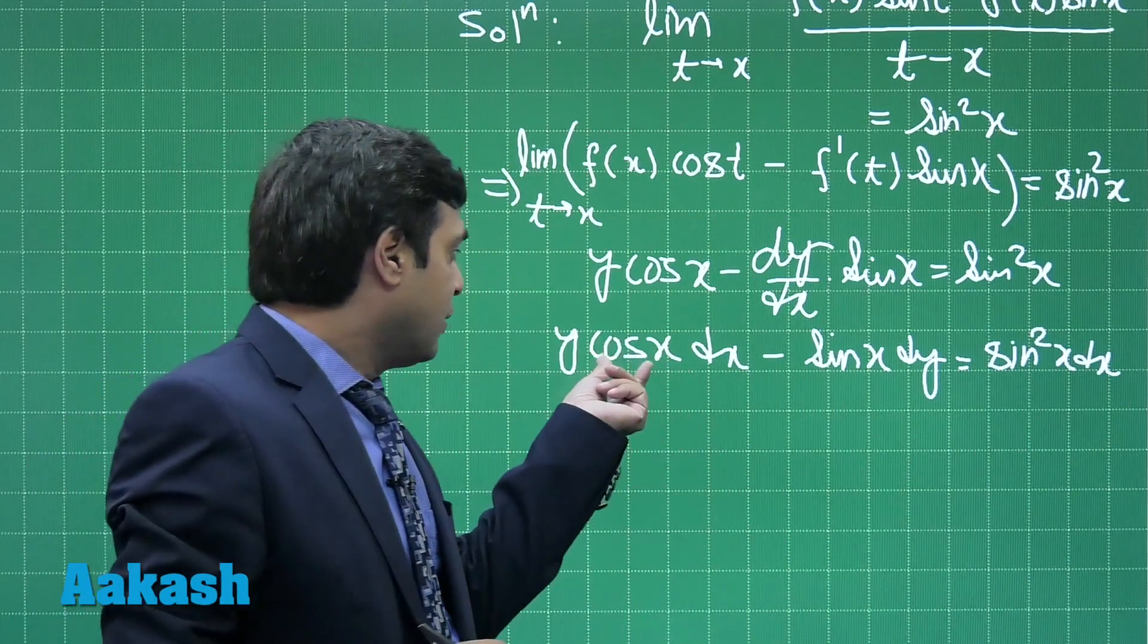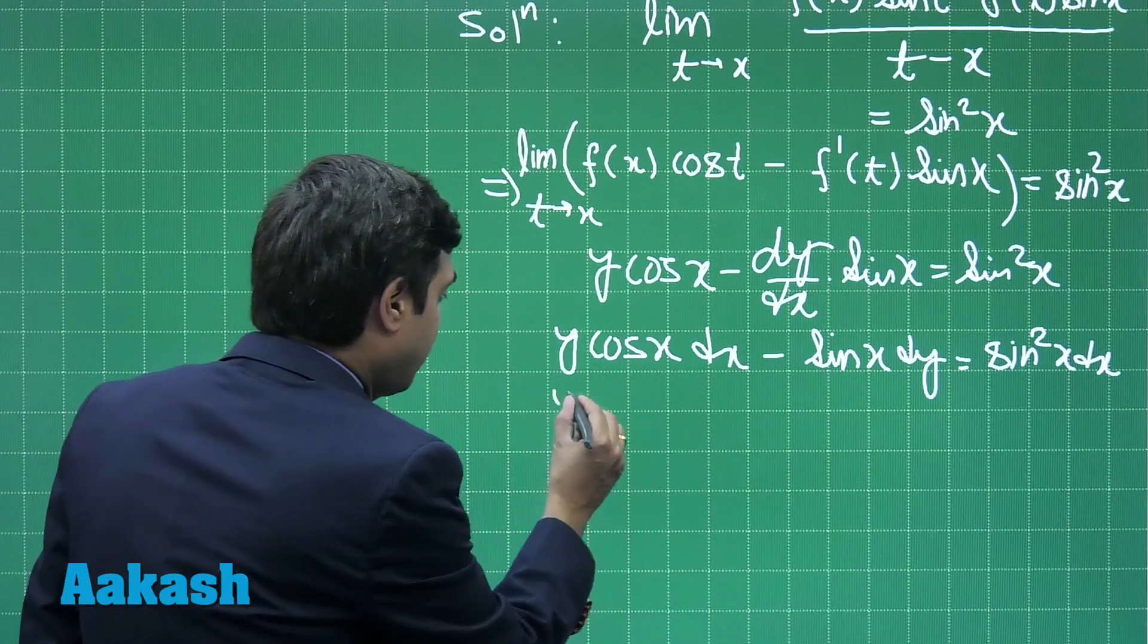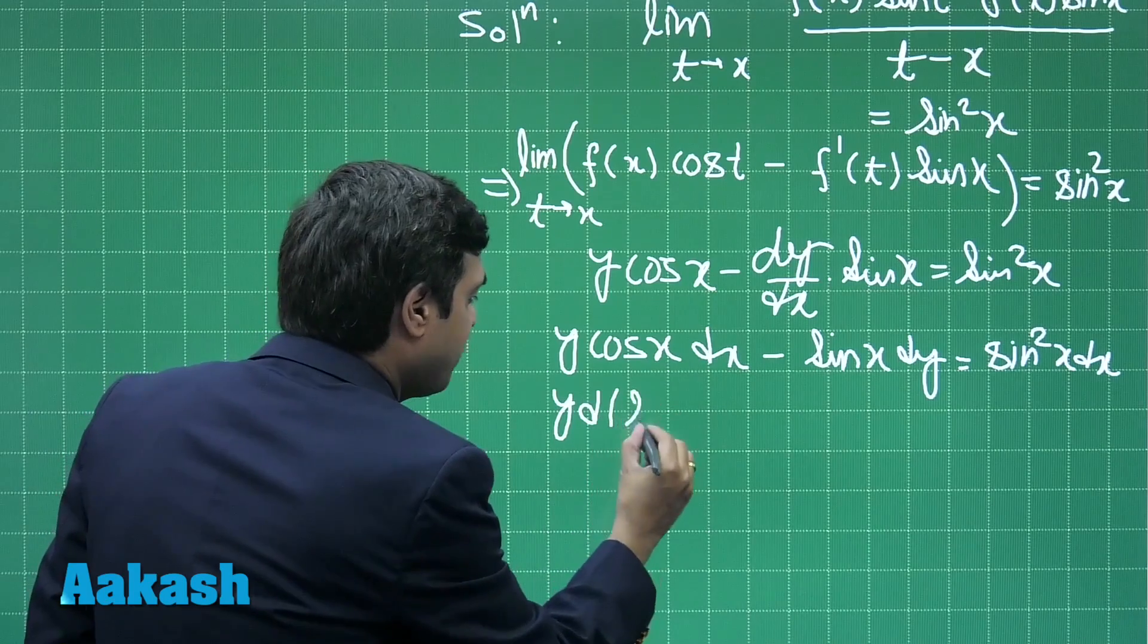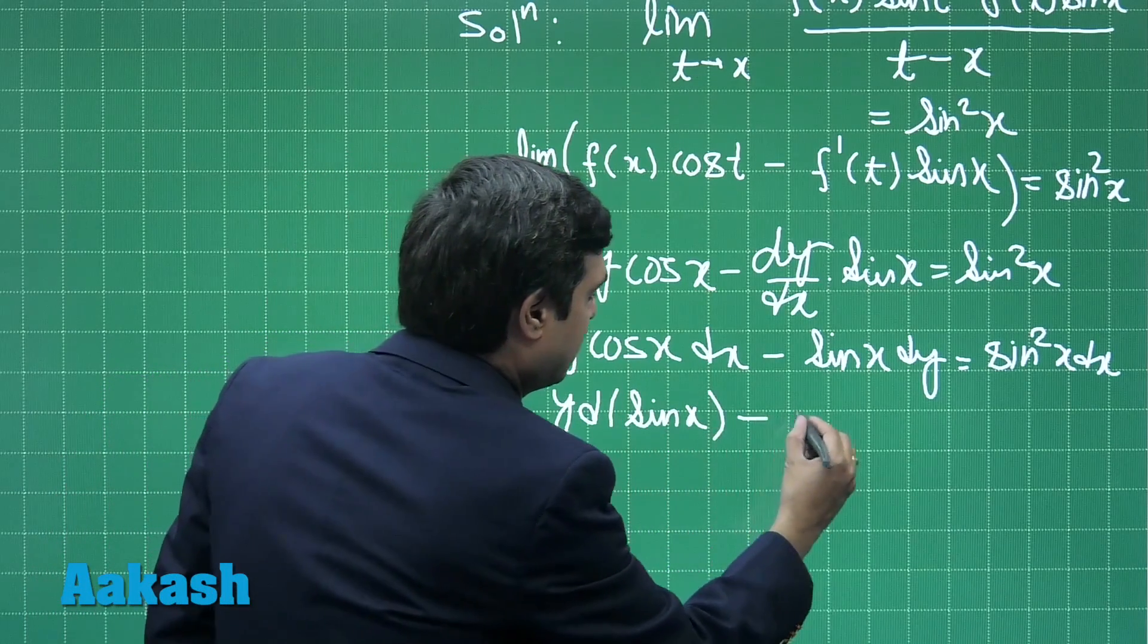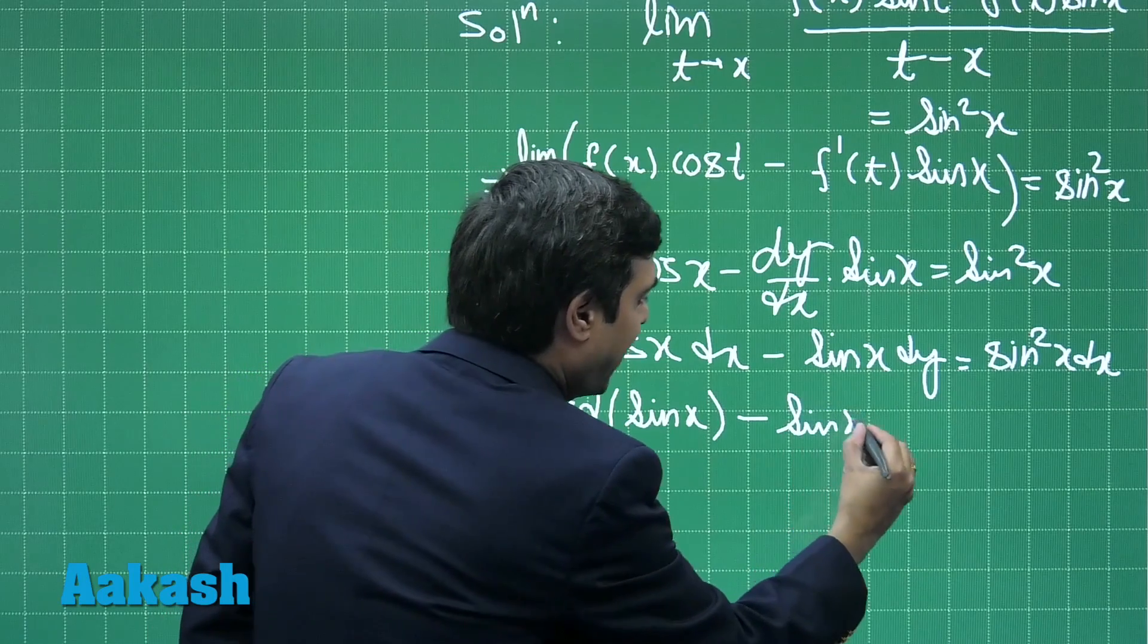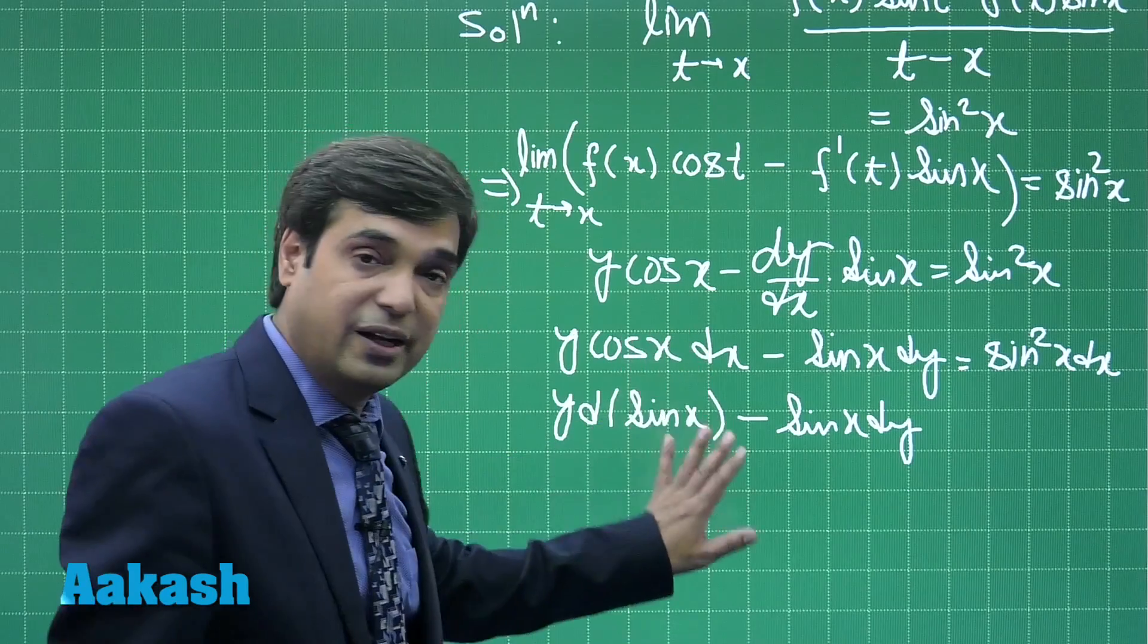When we look at this side, cos x dx is d(sin x). So it is y d(sin x) - sin x dy. This point is clear.